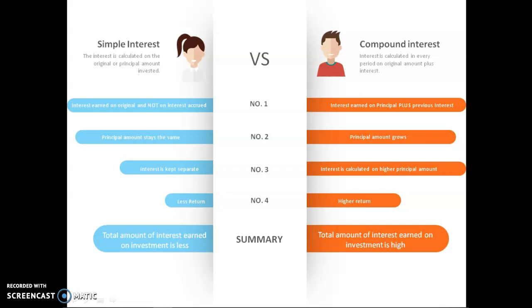The comparison of these is as follows. With simple interest, the interest is earned on the original amount and not on any interest accrued. With compound interest, interest is earned on the principal amount plus any previous interest.